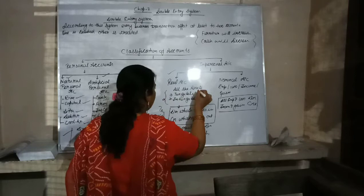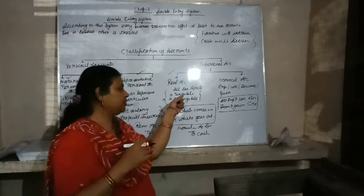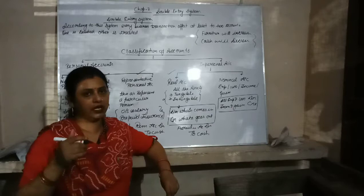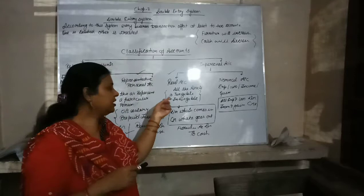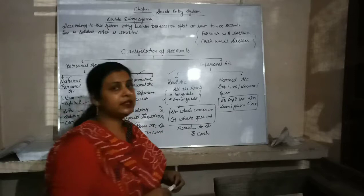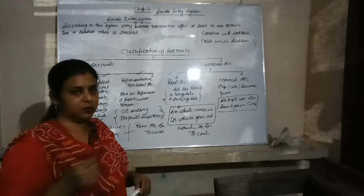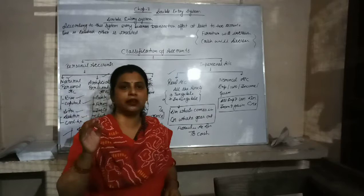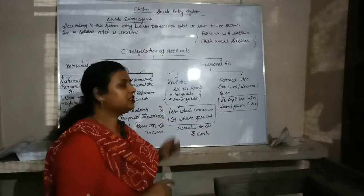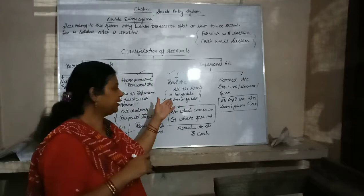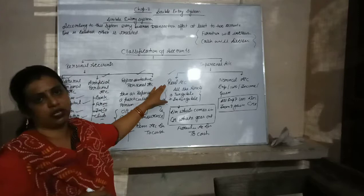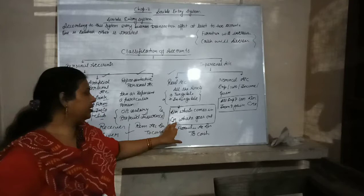What comes under real account? All the assets, whether tangible or intangible. Tangible assets are assets which can be seen and touched — like furniture, machine, building, and cash. Intangible assets are assets which cannot be seen or touched — like goodwill, trademark, and copyright. These are examples we have already studied in chapter number 2. All assets are recorded according to the rule of real account: debit what comes in, credit what goes out.